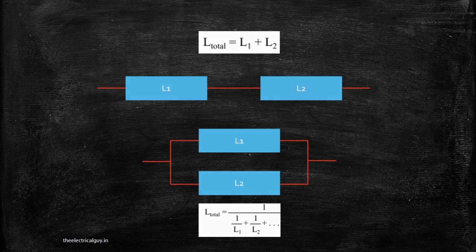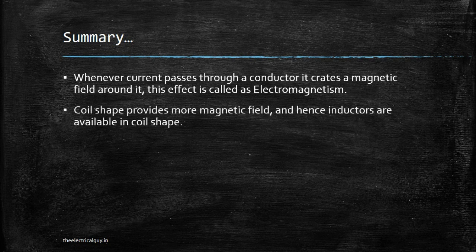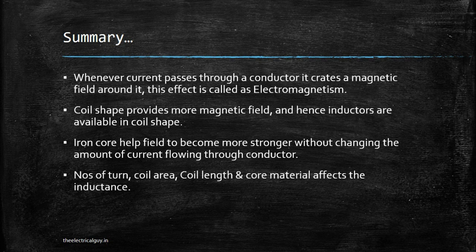Here is a summary of what we have covered. Whenever current passes through a conductor, it creates a magnetic field — this effect is called electromagnetism. Coil shape provides more magnetic field, hence inductors are in coil shape. An iron core helps the field become stronger without changing the amount of current. Number of turns, coil area, coil length, and core material affect inductance. Inductance adds in series and diminishes in parallel.